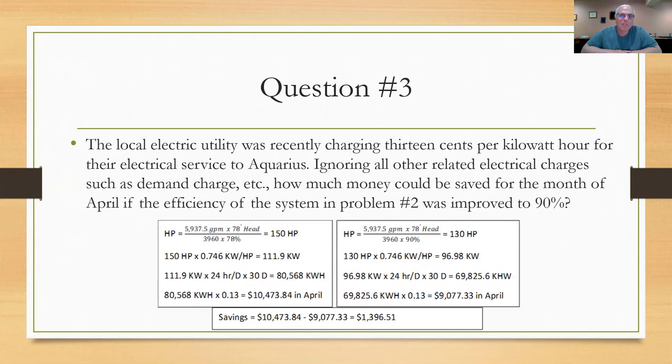On the left-hand side, I set up the equation for the 150 horsepower problem, and I multiplied that 150 horsepower by the 0.746 kilowatt hours or kilowatts per horsepower, and I come up with 111.9 kilowatts. I do that for 24 hours and 30 days, 24 hours a day for 30 days. I come up with a usage of 80,568 kilowatt hours for the month, and at 13 cents per kilowatt hour, it comes out to $10,473. Now, if I were able to run that same system under the same conditions except being 90% efficient rather than 78% efficient, I would work that through and come down with a $9,077 cost for April. So subtracting the two, I could expect to save $1,396.51. That's for the month of April at 90% efficiency. Hope you got that right. We'll move on to question number four.